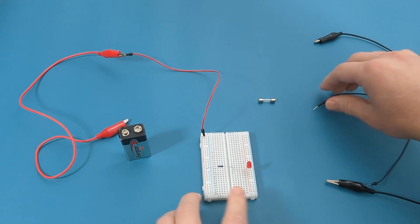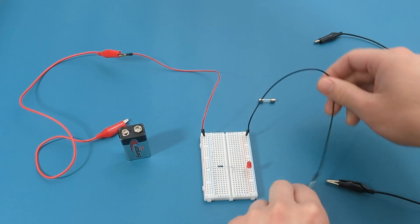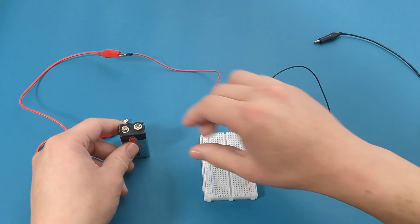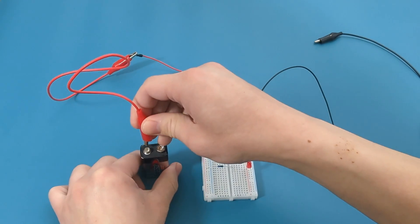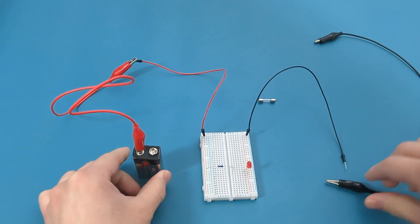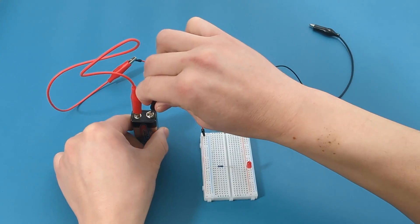Insert the black alligator wire to the negative end of the breadboard. Connect the opposite end of the red alligator clip to the battery's positive terminal. Connect one end of the black alligator clip to the battery's negative terminal.